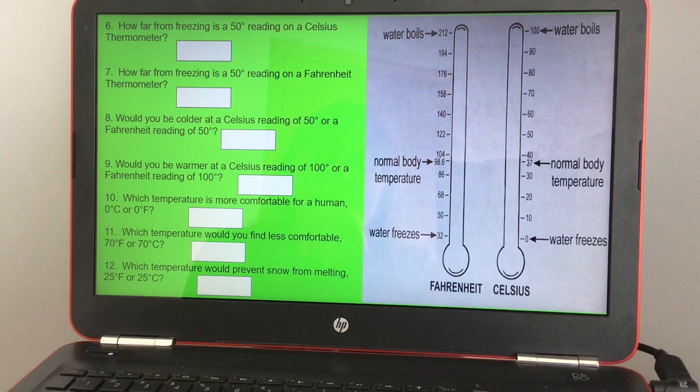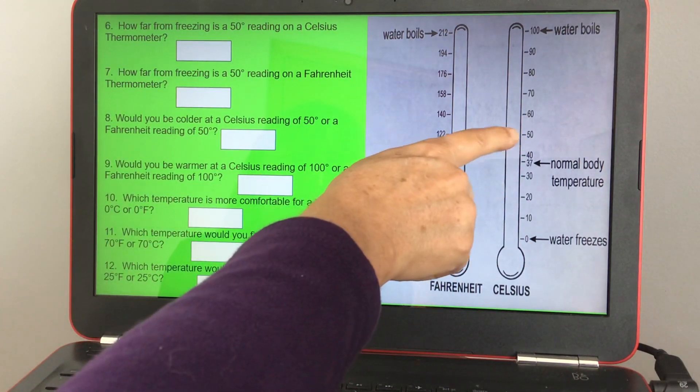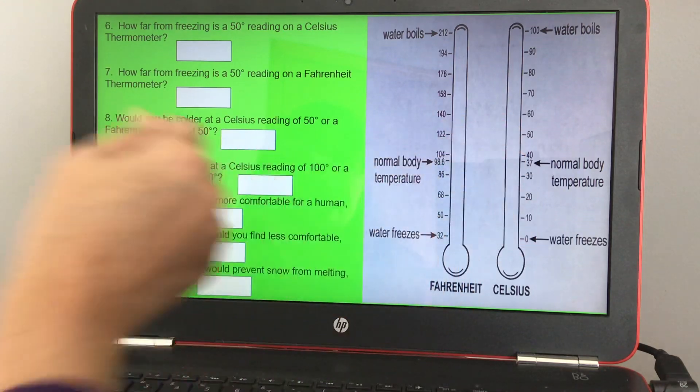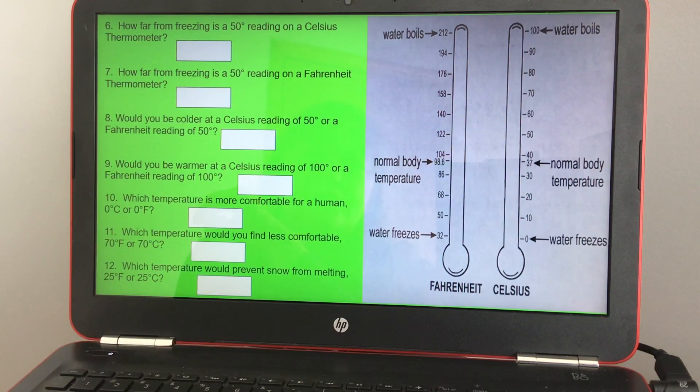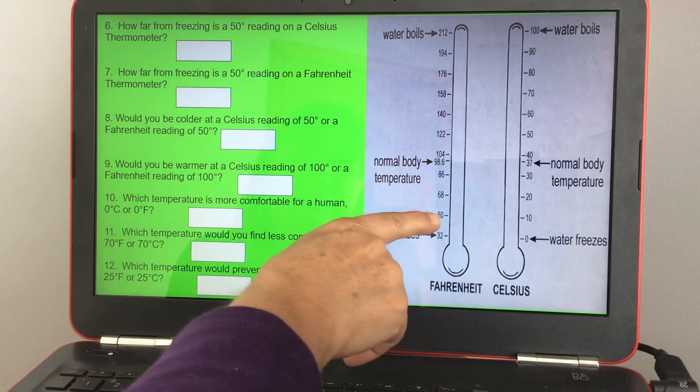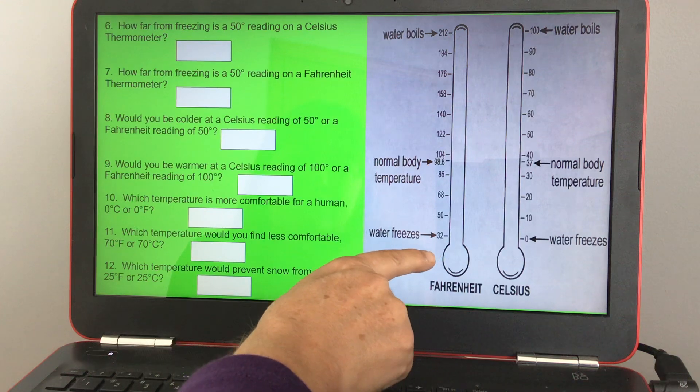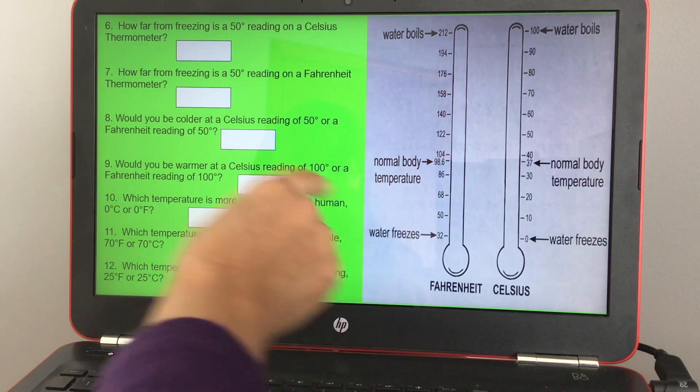I'm just gonna read them. Number six, how far from freezing is a 50 degree reading on a Celsius thermometer? So here's 50 degrees on Celsius and water freezes here. How many degree difference is that?